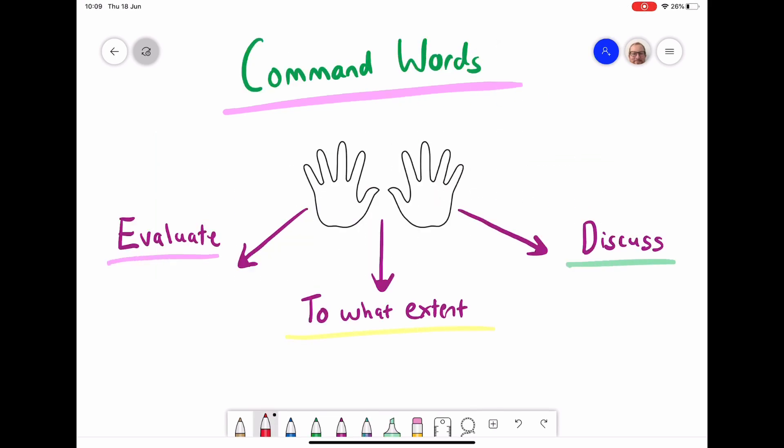Before we actually look at what we need to do for an AO2 question, we need to realize that there are certain command words that will make us think I need to apply AO2. Evaluate, the phrase to what extent, and discuss are all those command words that should trigger that thought process in your head.